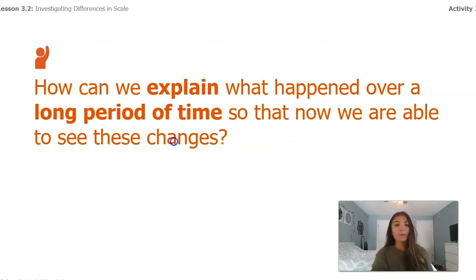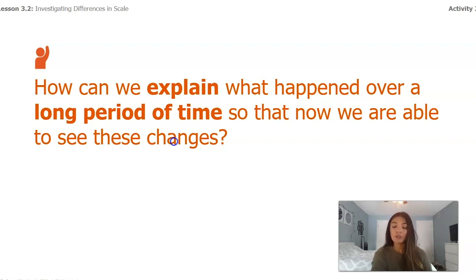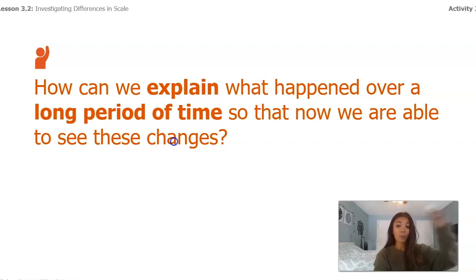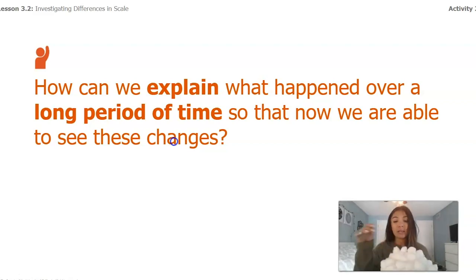So how can we explain what happened over a long period of time so that we are able to see these changes? We might not notice a tiny piece of rock coming off every few days, but after a long period of time with lots of little bits of rock eroded off the mountain due to rain, we will eventually be able to see a change in the shape of our mountain. This will take a lot of time — as we take a pom-pom off, that's 50 years. Thinking about all the pom-poms on this plate, that is a lot of years of bits of rock being taken off in order to see a really big change.